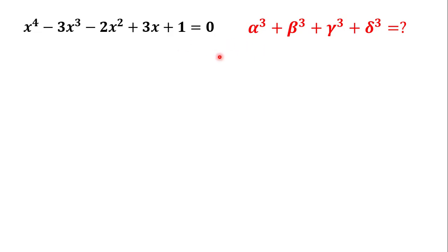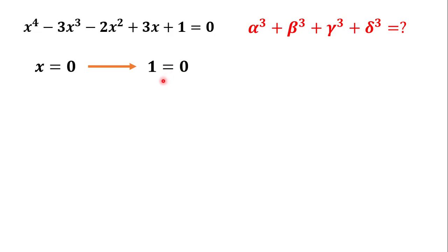If we replace x by 0 we get 1 equals 0, which isn't true, so we can say 0 cannot be a root. Therefore we can divide this equation by x squared.